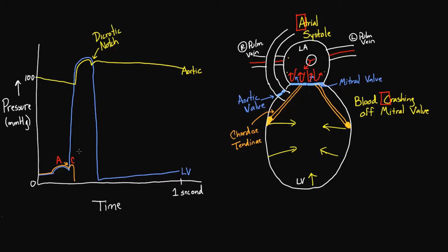So you've got the A wave and the C wave. Then, over time, now that the mitral valve is closed, more blood keeps coming in from the left and right pulmonary veins — that's continuously happening. But now there's no continuous space with the left ventricle, so all that blood has only one chamber to sit in: the left atrium. The pressure starts rising and rising in the left atrium because it's taking in a lot of blood and can't release it since the mitral valve is still shut.